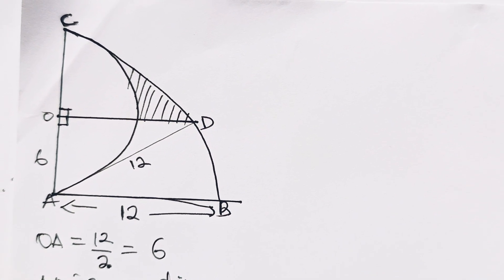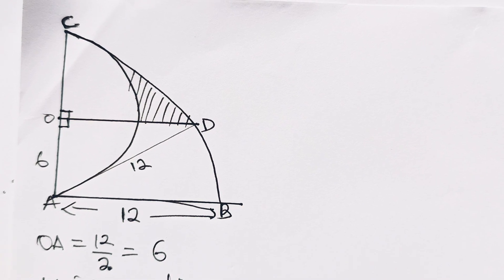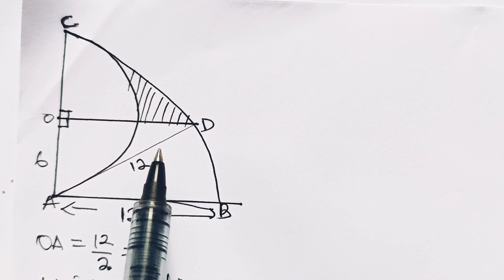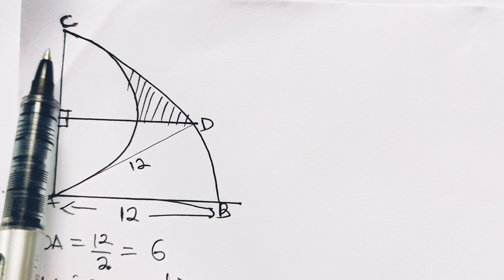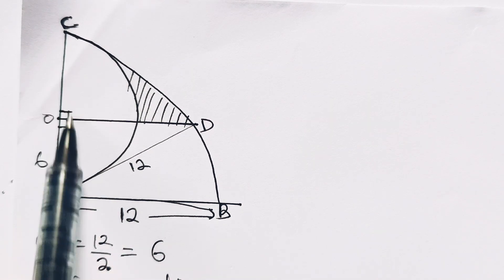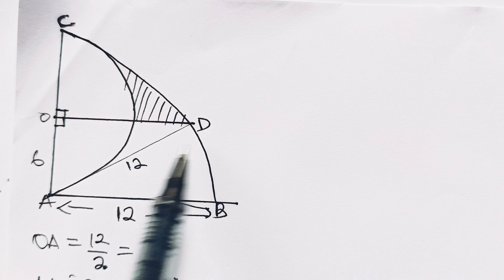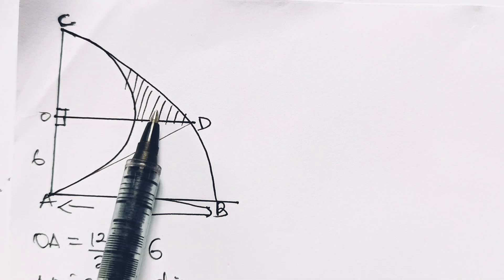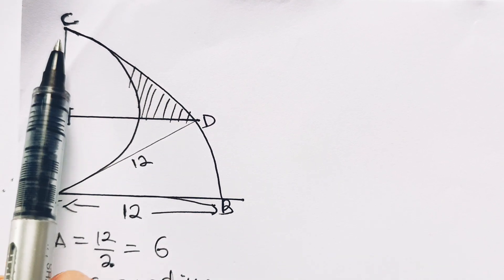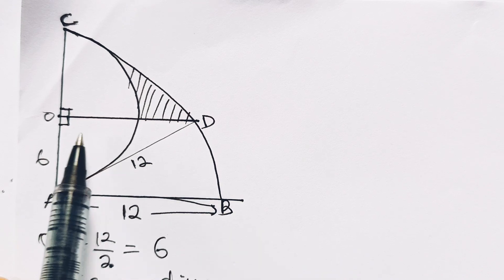We are asked to find the area of the shaded portion. The shaded area involves a sector of a circle — it is supposed to be curved here, but because it's a freehand sketch I wasn't able to get it that curved.